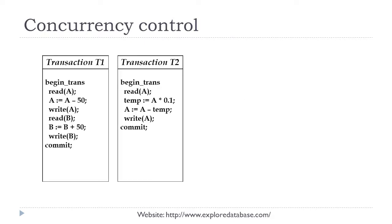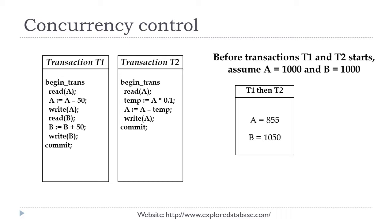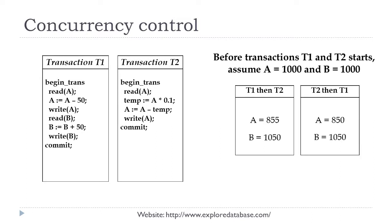To discuss this, we will take an example of transactions T1 and T2. T1 transfers money from account A to B, whereas T2 reduces the money by a certain percentage. If we execute these two transactions with the initial value of A and B as 1000, executing them in a serial order — first all instructions from T1 then T2, or T2 then T1 — we get two results, both considered consistent results.